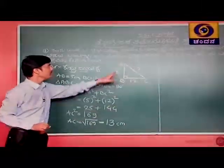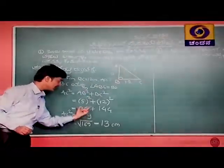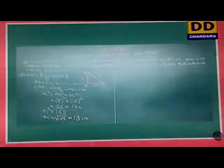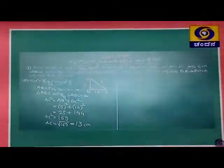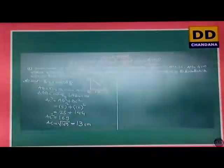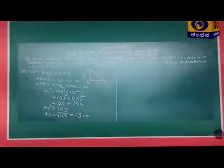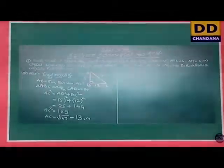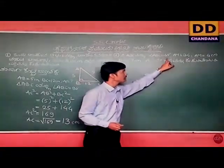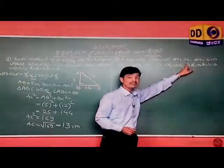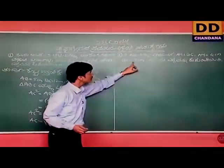Thank you very much. I am the only question. A, B, C, and B, C is equal to 40. When AM is equal to 4 centimeters, B, C is equal to 7 centimeters.